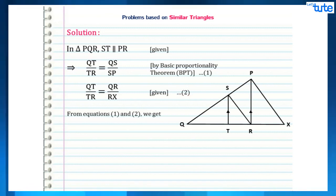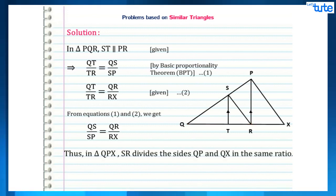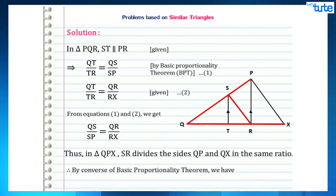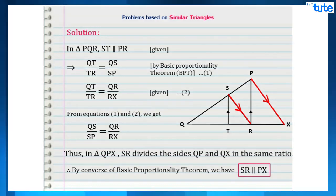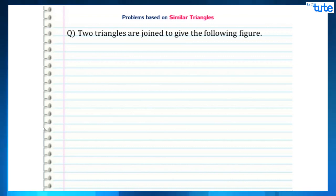When we compare equations 1 and 2, we get QS/SP = QR/RX. Thus, in triangle QPX, SR divides the sides QP and QX in the same ratio, and so by the converse of the basic proportionality theorem we can say that SR is parallel to PX.